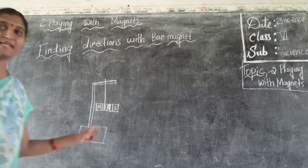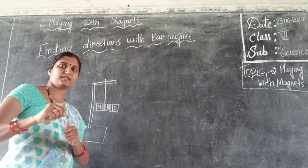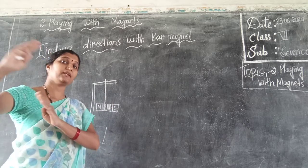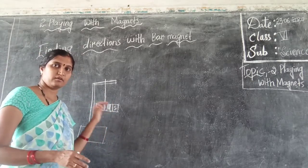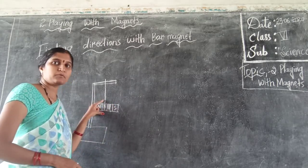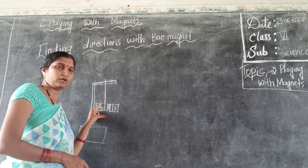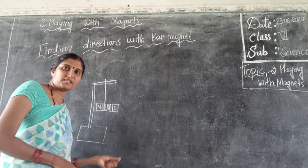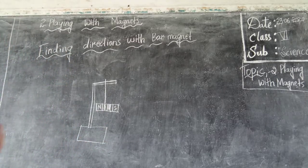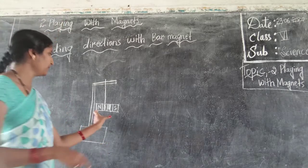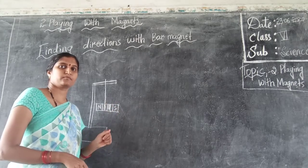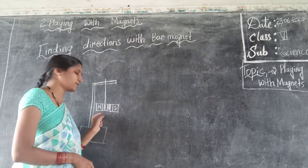Repeat this experiment — not only in one place. Change places and keep it in another location. See the movement and after it comes to rest, observe the position of the bar magnet and see the direction of north and south. Check whether any changes are observed. Magnets always come to rest in the direction of north and south — that rest position is always the north and south direction.